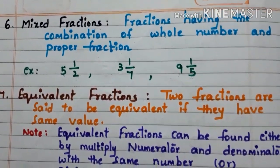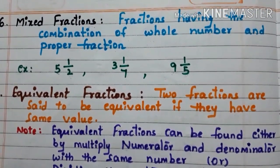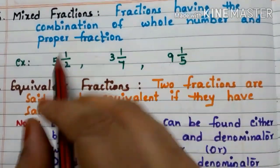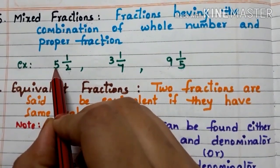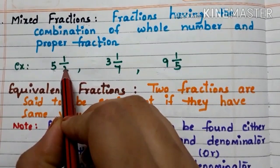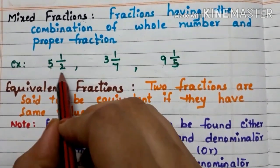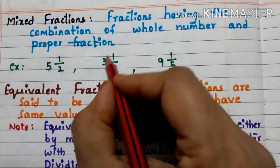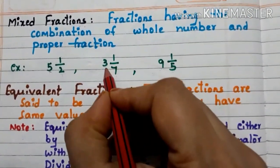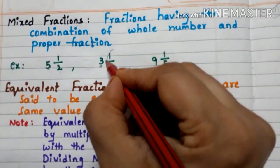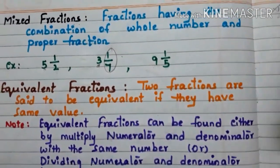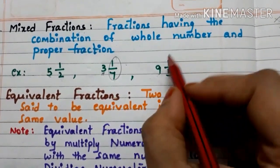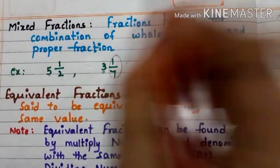Now, mixed fractions. Fractions having the combination of a whole number and a proper fraction are called mixed fractions. Here we have some examples. 5 and 1 by 2 — 5 is the whole number and 1 by 2 is the proper fraction. 3 and 1 by 7 — 3 is the whole number and 1 by 7 is the proper fraction. 9 and 1 by 5 — 9 is the whole number and 1 by 5 is the proper fraction, so 9 and 1 by 5 is a mixed fraction.